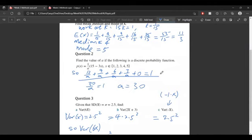Actually, I think that's it for the question. If it's a discrete probability function, it means the probabilities will sum to one. When we have the probabilities and sum all the values, they add up to one. So a is 30 in this case.